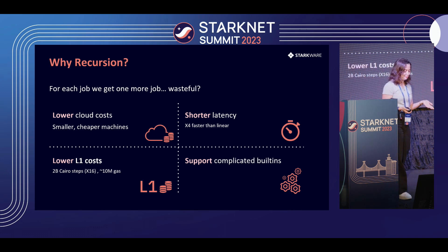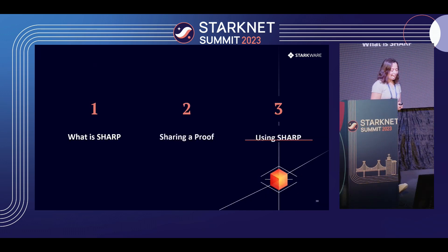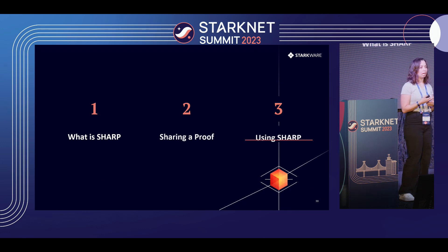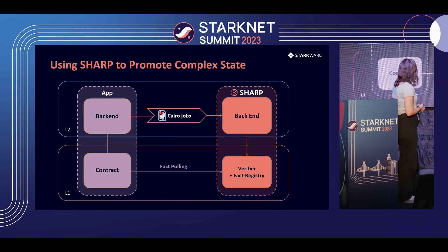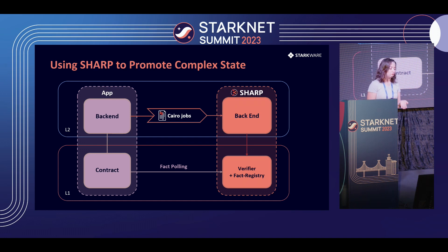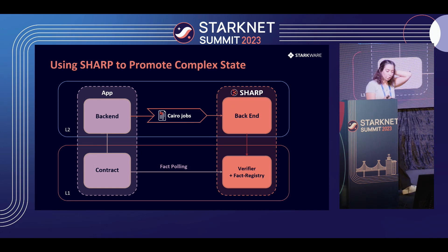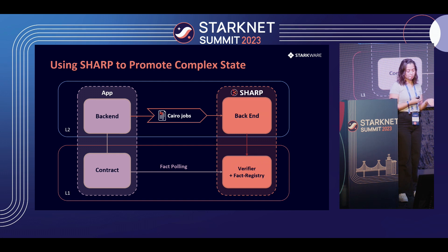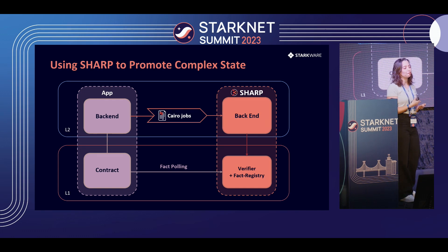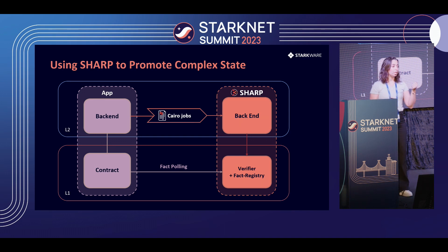Recursion is really, really powerful, as I hope you now agree. Let's talk about how we can use this powerful system with different applications. Imagine you have some application that implements complex logic and you don't want to — or maybe can't — implement that logic on-chain. You can write the logic in Cairo, which is Turing complete so you can write any logic you want, and send these jobs to Sharp. Sharp proves the execution of the Cairo program off-chain, sends it on-chain to be verified, and writes the unique fact identifier on-chain. The application's contract on-chain can then just check that the fact is there to advance its state.